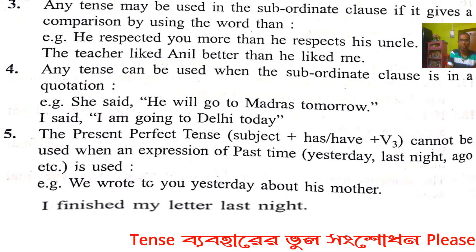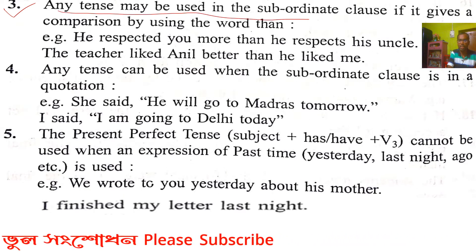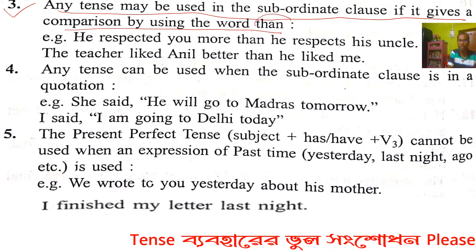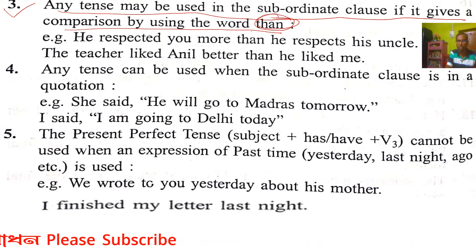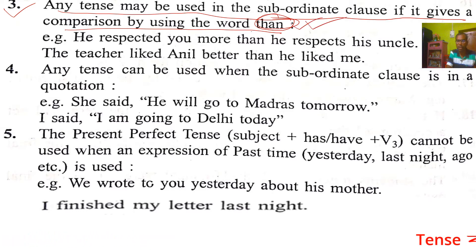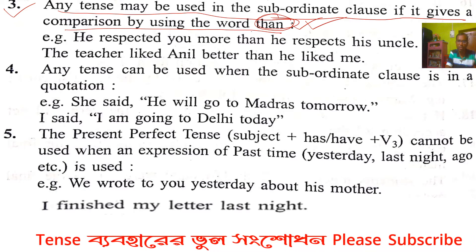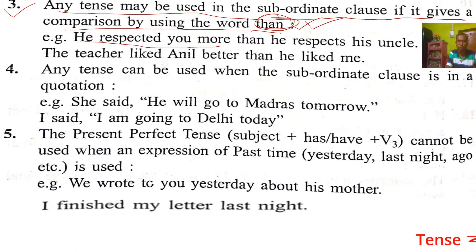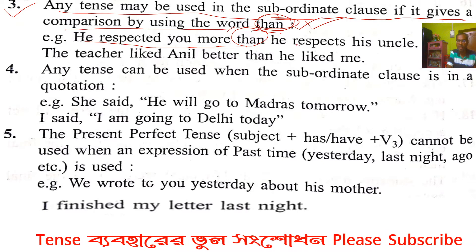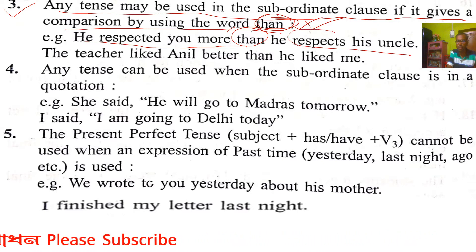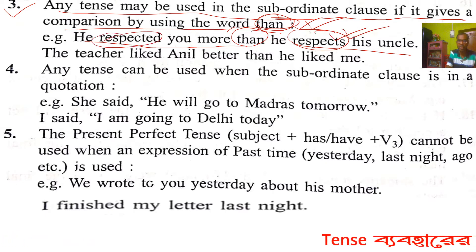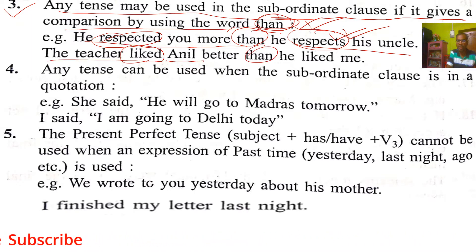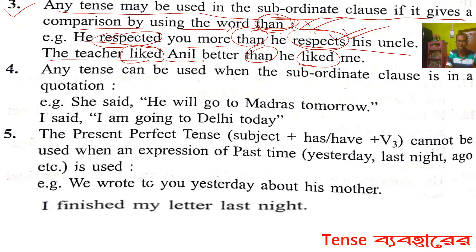Rule 3: Any tense may be used in the subordinate clause if it gives a comparison by using the word 'than' — the verb tense in both clauses remains the same. Example: 'He respected you more than he respects his uncle.' And: 'The teacher liked Anil better than he liked me' — both verbs are past tense, the same tense is maintained.